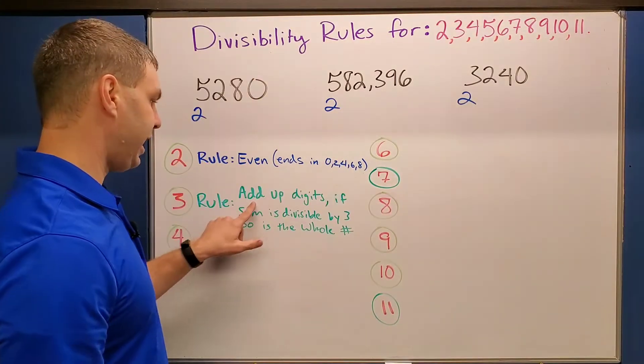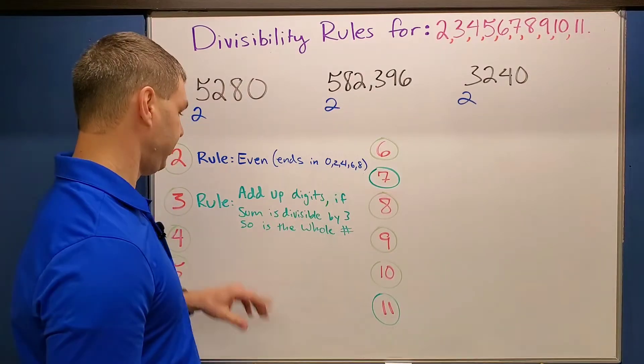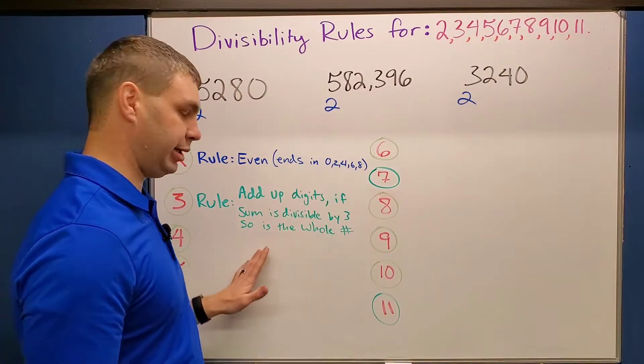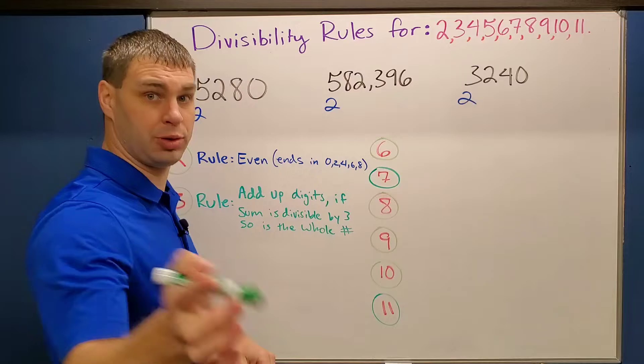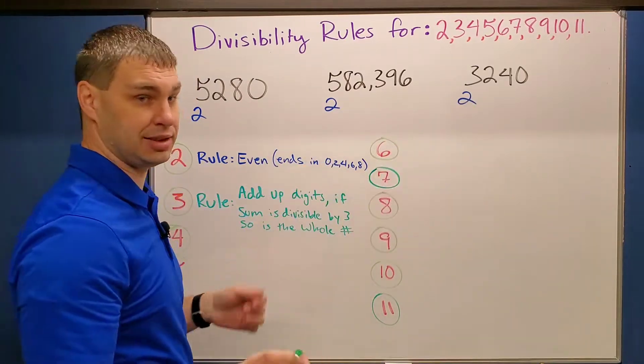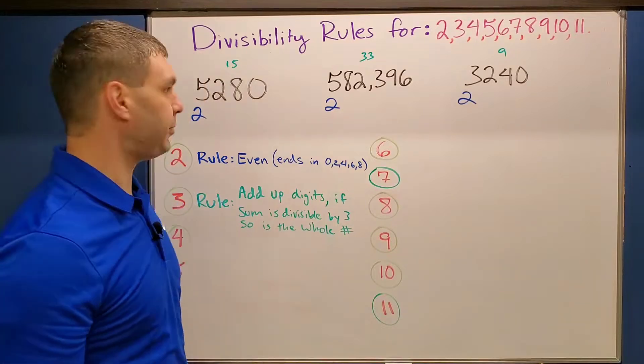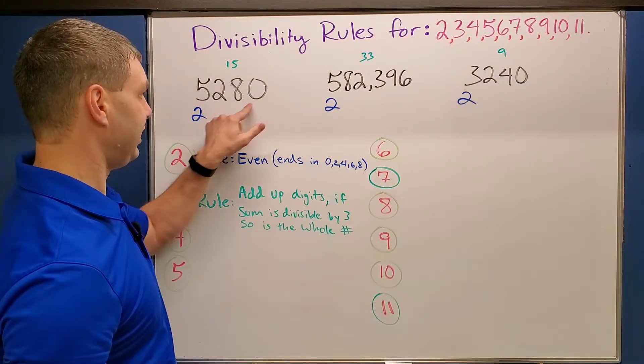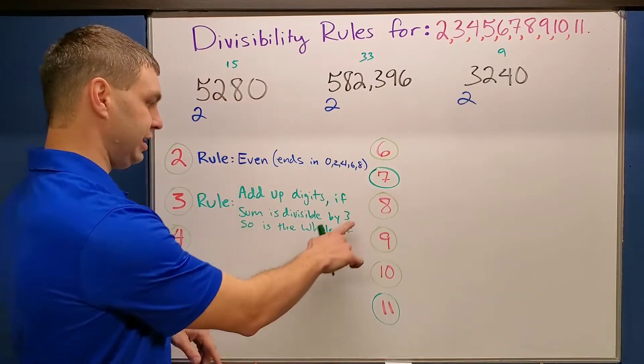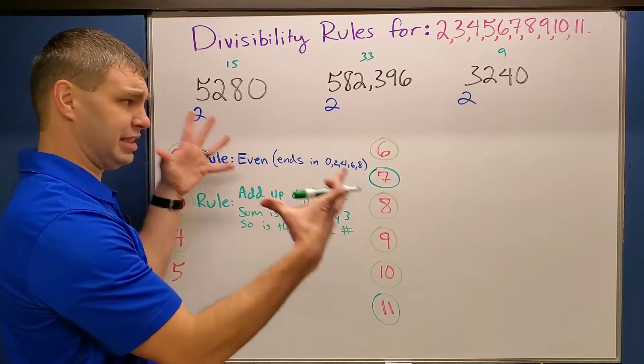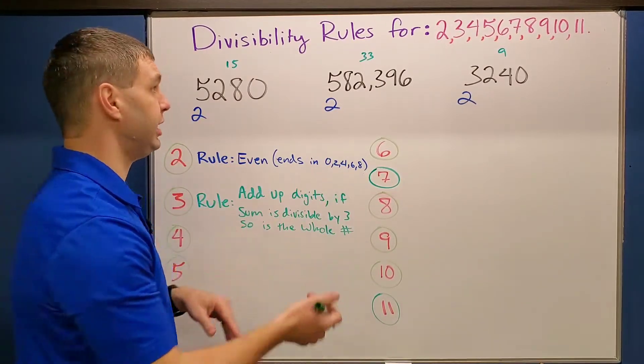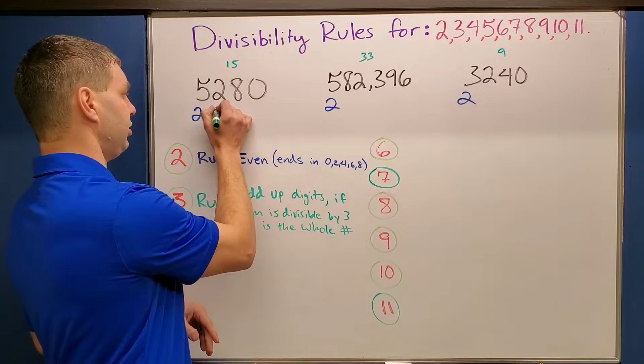The rule for three says if we add up all the digits of that number, and their sum is divisible by three, then so is the whole thing. So let me quick add these digits up for you for our test numbers. After writing those up, I saw in my first one, these digits added up to be 15. 15, I know is divisible by three. The idea is to get to a smaller number that you're able to do. So since 15 is divisible by three, so is the whole thing.